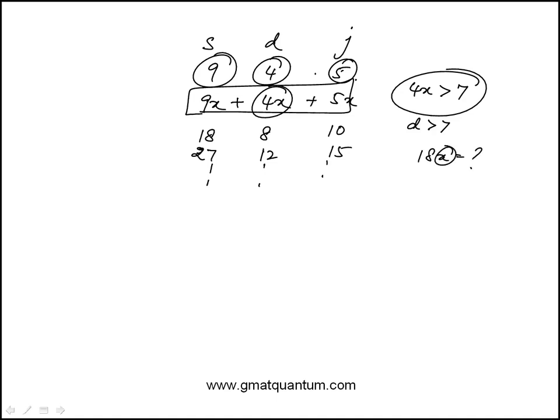So it's about finding this multiplier. Starting with statement 1, it says the total number of shirts and jackets, 9x plus 5x, is less than 30. So 14x is less than 30, which gives x is less than 15 over 7, or 2 and 1 seventh.